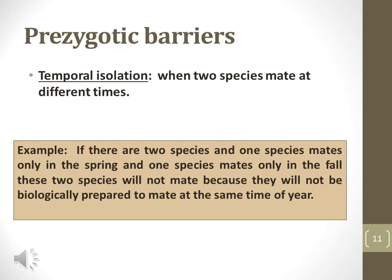Another type of prezygotic barrier is temporal isolation. Temporal isolation occurs when different populations reproduce at different times, so the population's gene pools never mix.